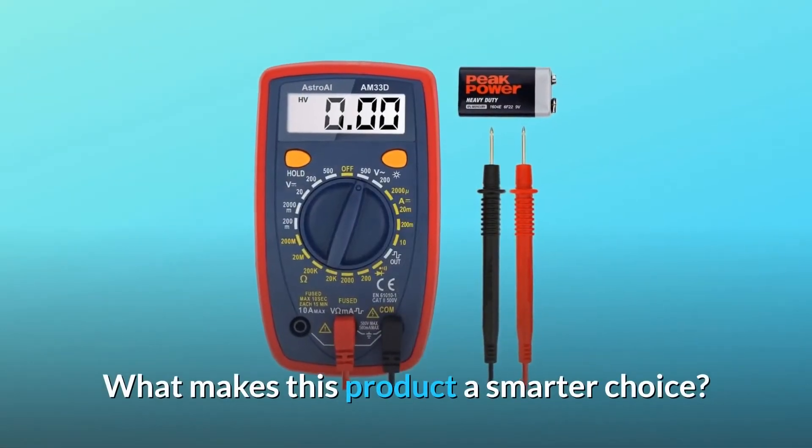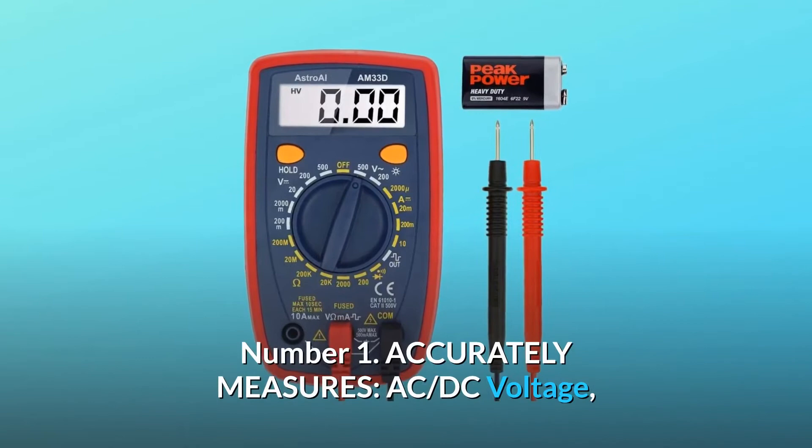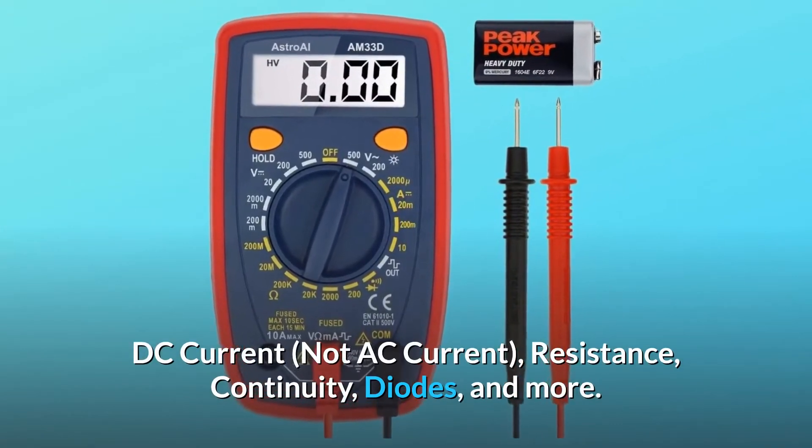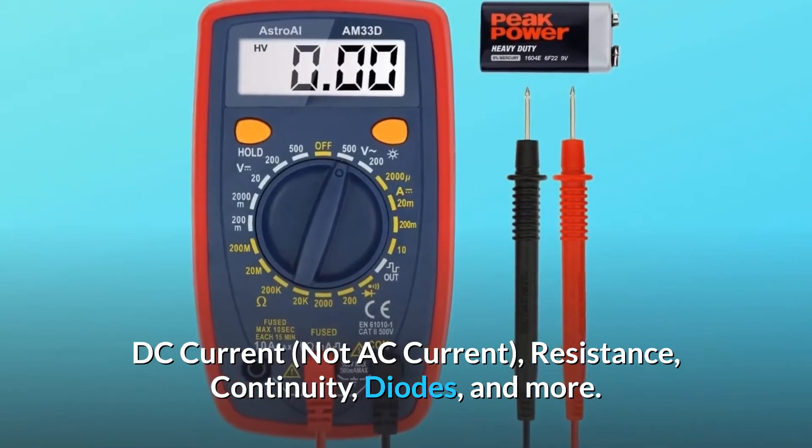What makes this product a smarter choice? Number 1: Accurately measures AC-DC voltage, DC current, not AC current, resistance, continuity, diodes, and more.